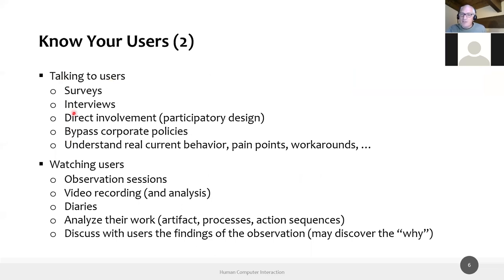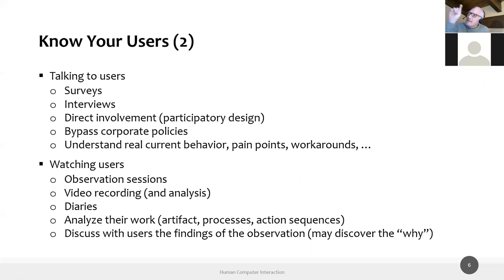There are different instruments for talking to users. We already said we cannot just go and ask what they need or want — they'll say 'more money' or 'holidays,' or give something very specific like 'I'd like this button to be larger because I use it 10 times a day.' But this is not something you can build a system on. We need instruments where we are not explicitly asking the user what they want, but at the same time we can extract information and discover what they would really need, even if sometimes they are not aware of it.